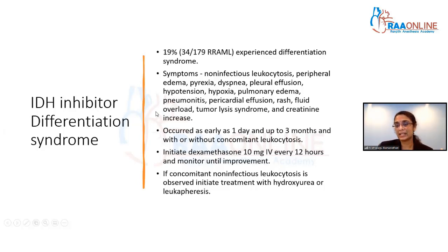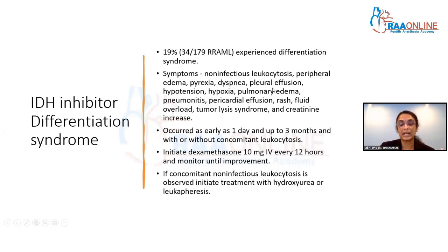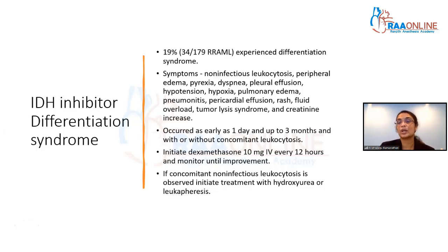The reason this happens is that these inhibitors, or ATRA, cause differentiation of the cells. You tend to see maturation arrest in these conditions with APL or IDH mutations. So when you use drugs that inhibit it, the cells start to differentiate and cause a high white count. You can treat it with dexamethasone, and once it's under control, you can restart these agents.